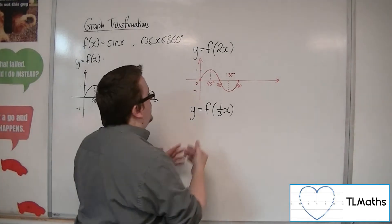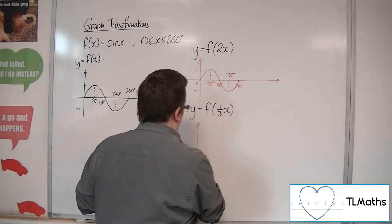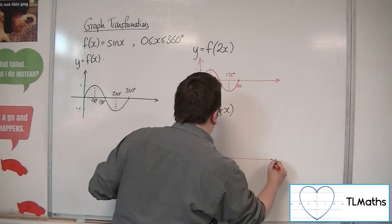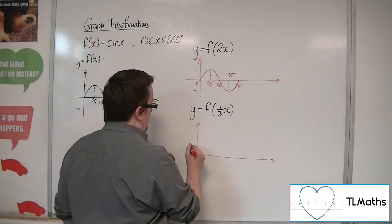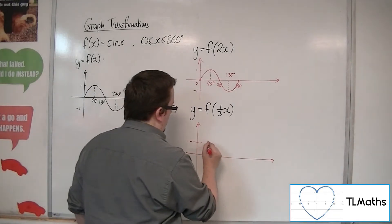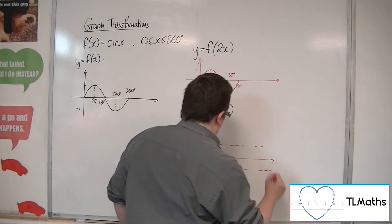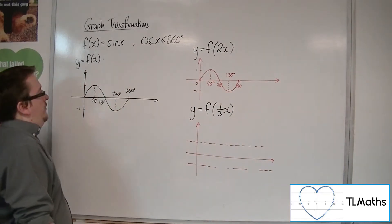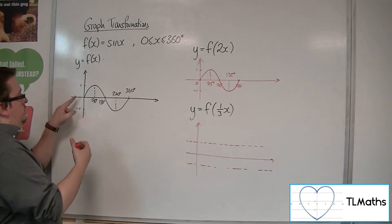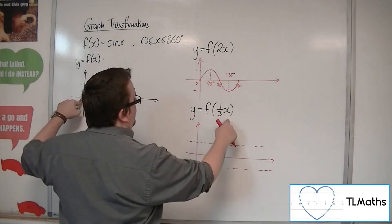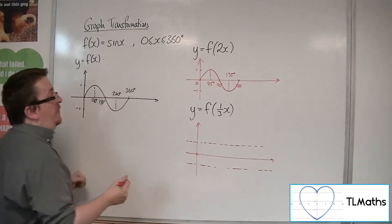Let's have a look at y equals f of a third x. Let's put in some guidelines. When x is 0, we get f of 0, which we know is 0. So it goes through (0, 0) still.